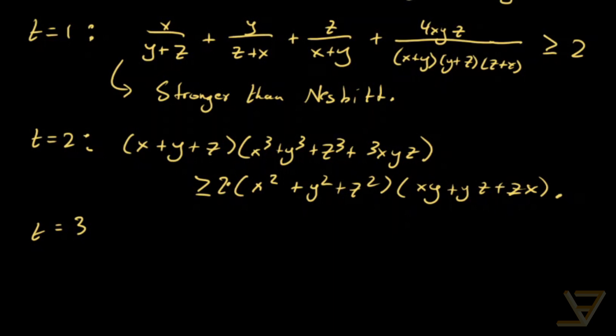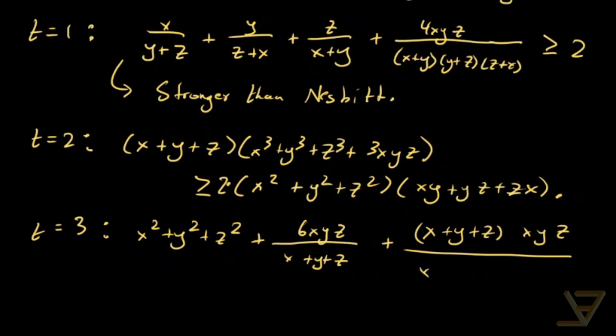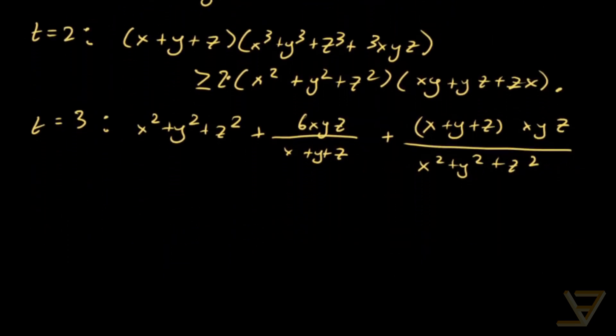And for t equals three, we find that there is the following interesting inequality: (x²+y²+z²+6xyz)/(x+y+z) + (x+y+z)(xyz)/(x²+y²+z²) is greater than or equal to 2(xy+yz+zx).